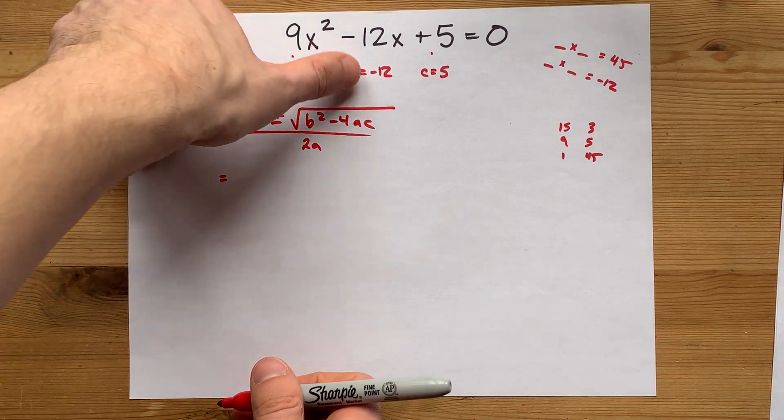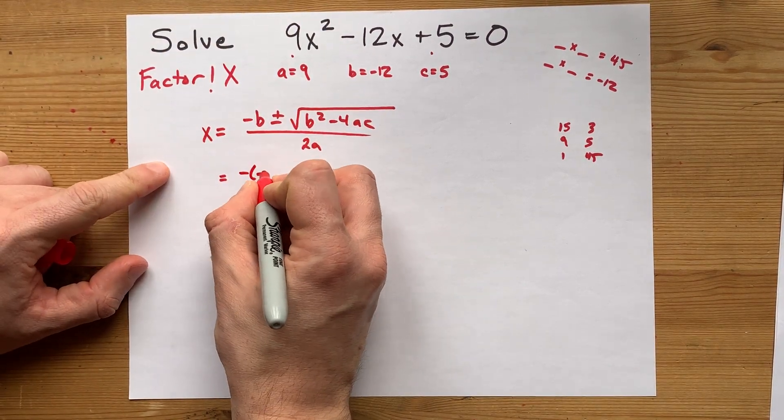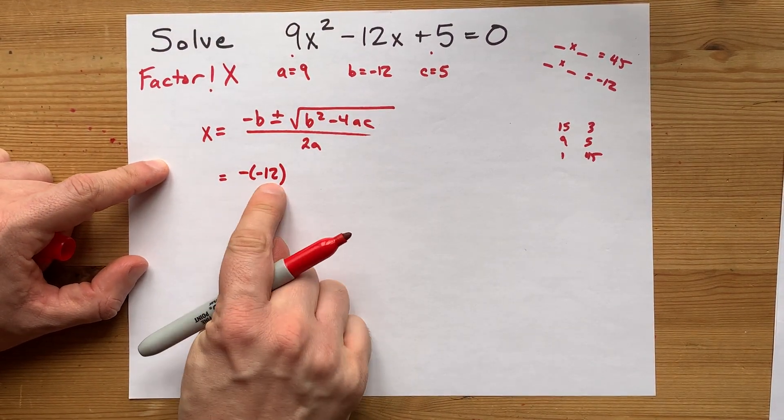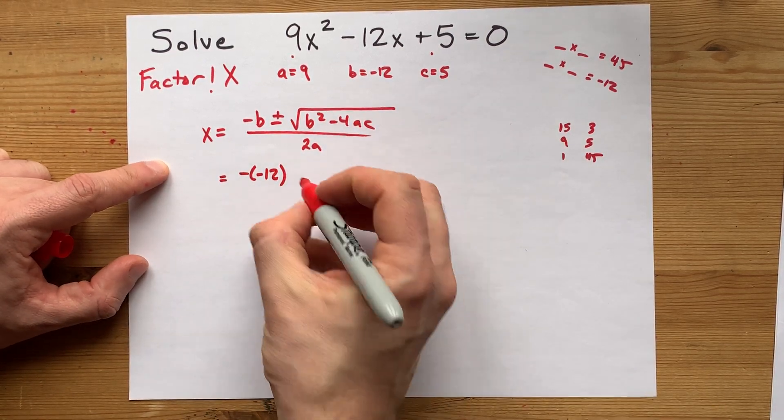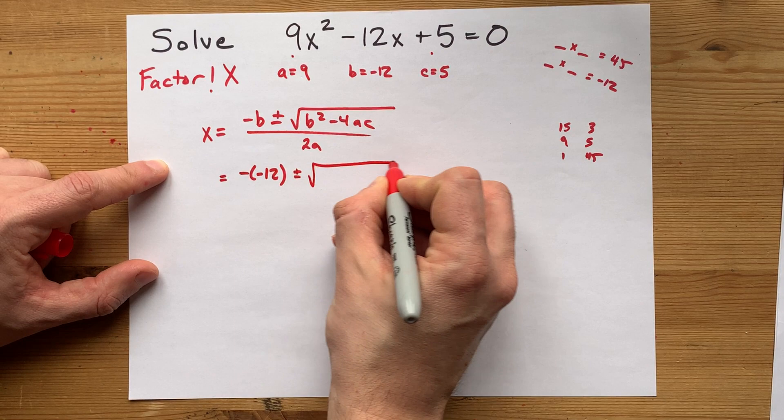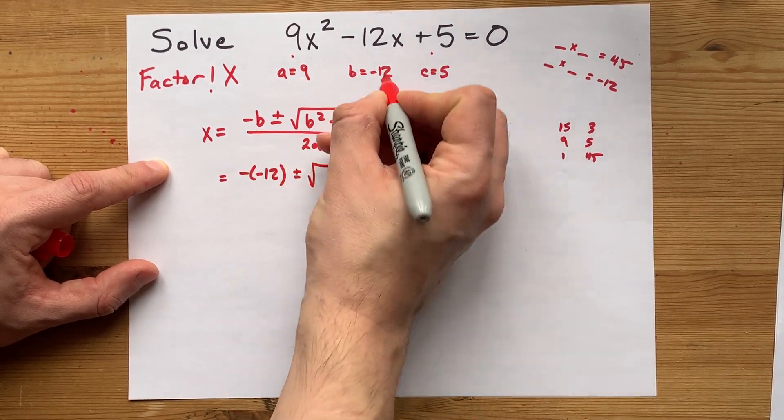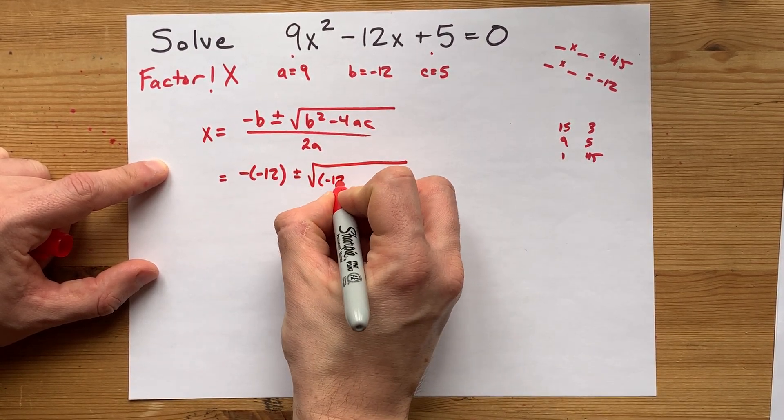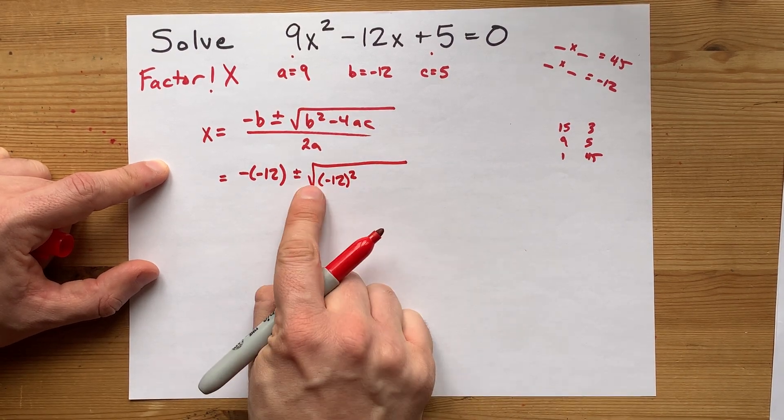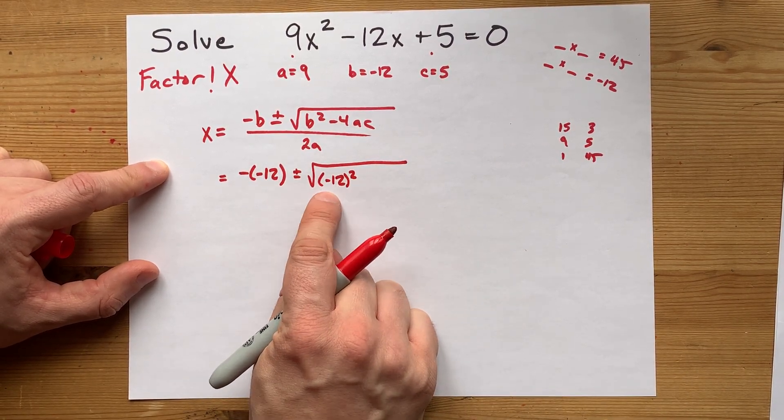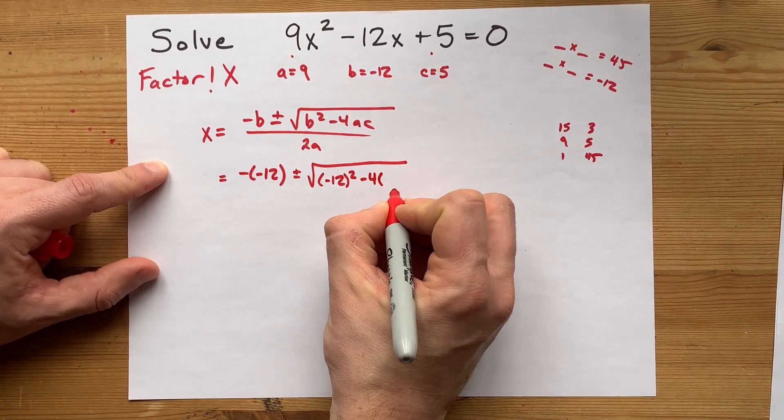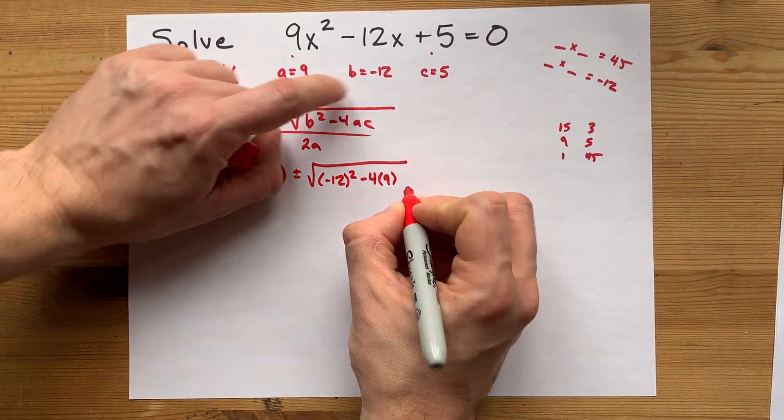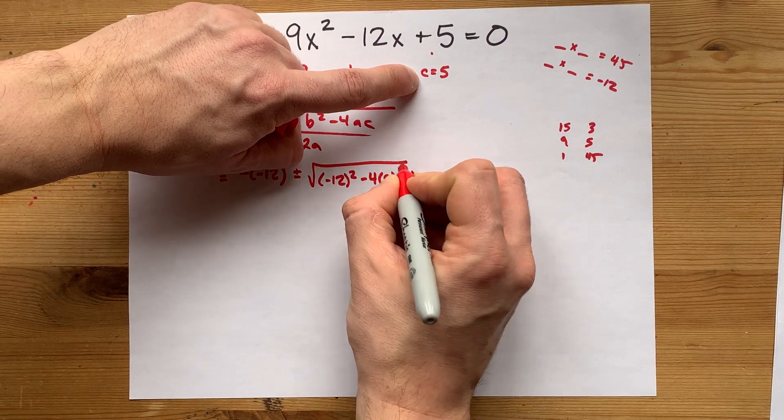Negative B is negative negative 12. You could just write that as positive 12, but I'm going to do it pedantically here. Plus or minus the square root of... Now, that B is negative 12. Make sure you put that in brackets squared, especially on your calculator. When you square a negative, you're supposed to get a positive number.